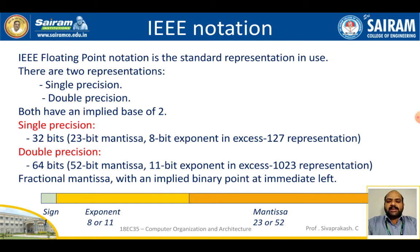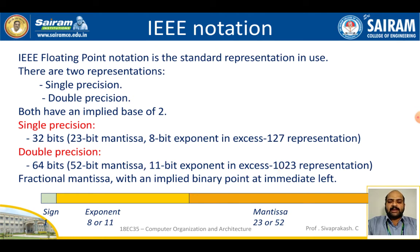In the 64-bit double precision representation, bits 0 to 51 (52 bits) form the mantissa, bits 52 to 62 (11 bits) represent the exponent in XS-1023 form, and bit 63 (the MSB) is the sign bit. This structure is called IEEE notation.